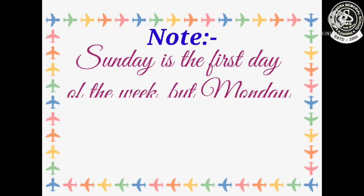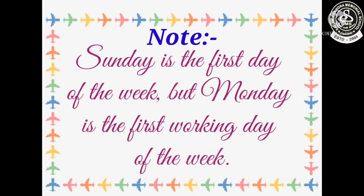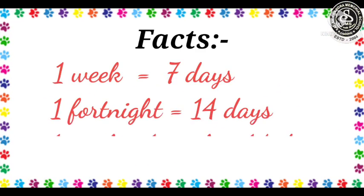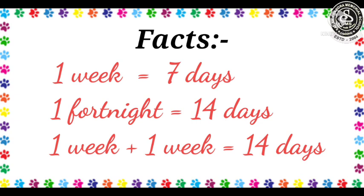And note, Sunday is the first day of the week, but Monday is the first working day of the week. Now let us see some facts. 1 week is equal to 7 days. Next, 1 fortnight is equal to 14 days — that means 7 days plus 7 days, we get a total of 14 days.